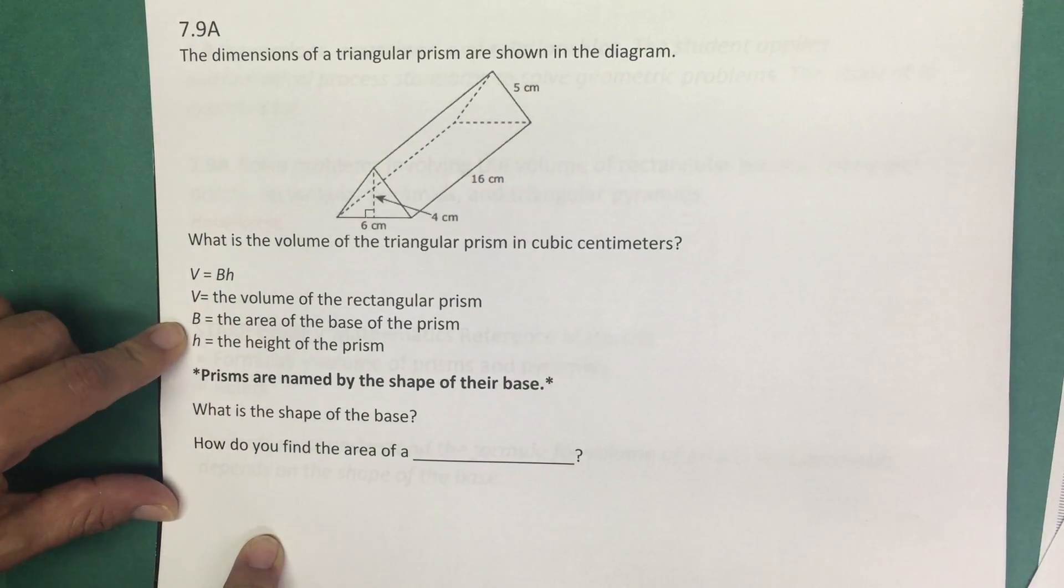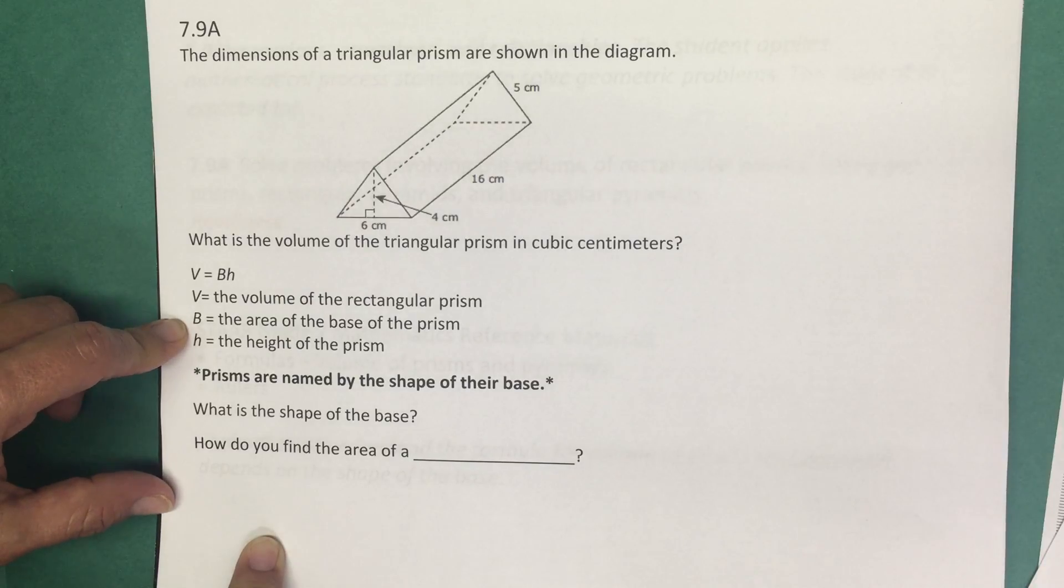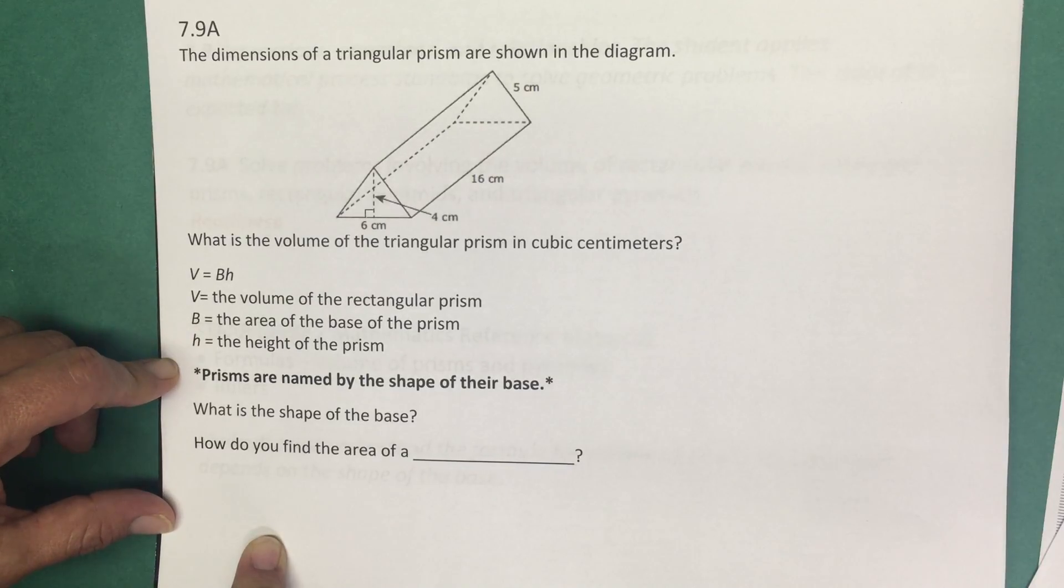Let's identify our variables. So V is the volume of the rectangular prism, B is the area of the base of the prism, and H is the height of the prism.